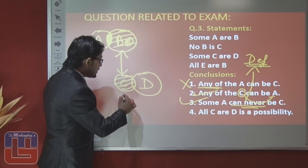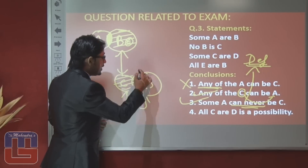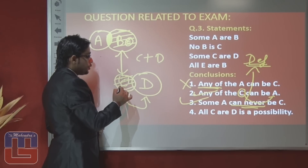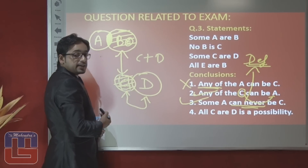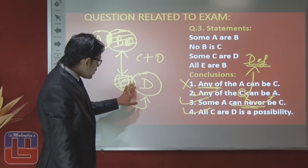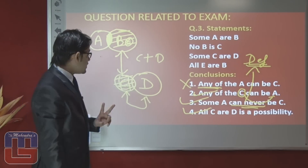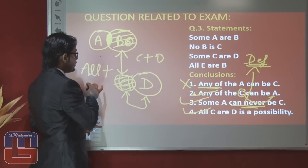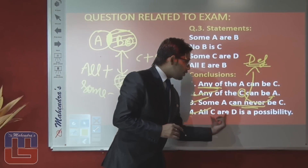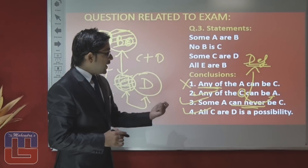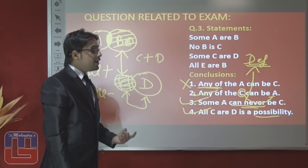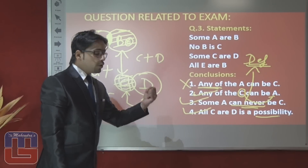Conclusion 4: 'All C are D is a possibility' — there is some positive relation between C and D; if the rest of the area also goes in D, we get all C are D. If some positive is given, only two possibilities exist: all positive and some negative. The examiner asks about all positive (all C are D), so the answer is true. Right answer: conclusions 2, 3, and 4 are all true.